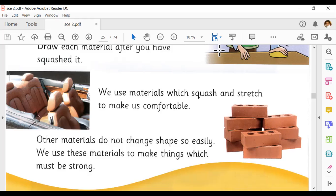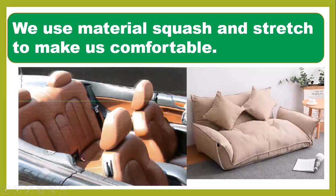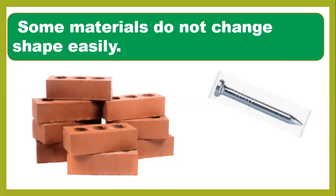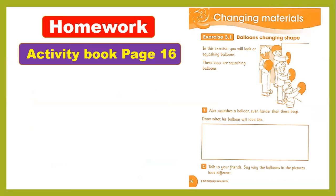Look at the bricks — bricks are very hard material, so you need more force to break or change their shape. You need to give them heat or use a hammer. Some materials do not change shape easily by hand — you need tools like a hammer. If you want to change the shape of a nail by bending, you need to apply heat.